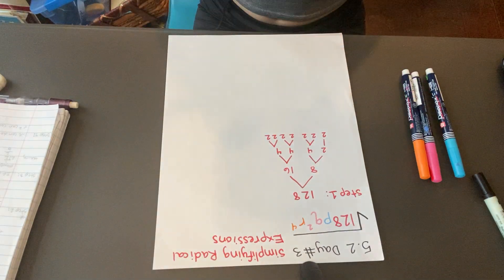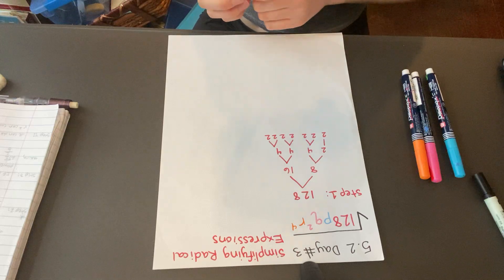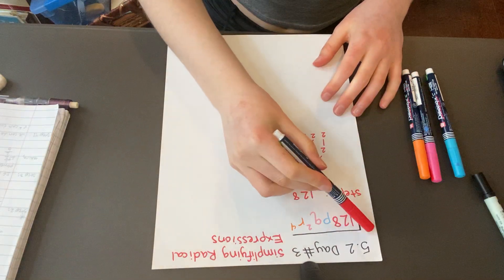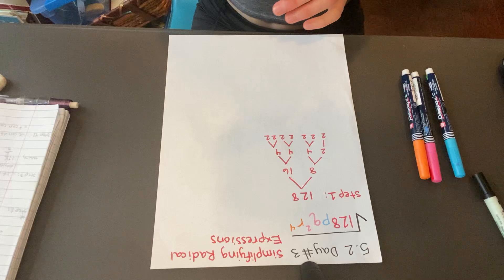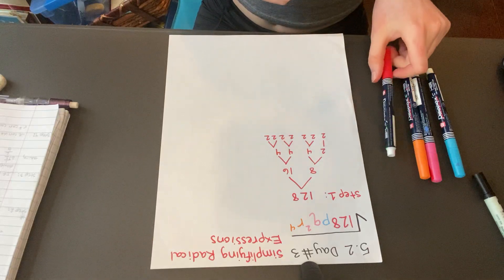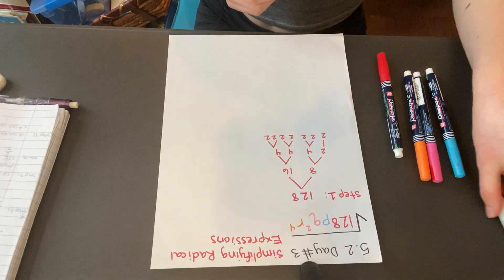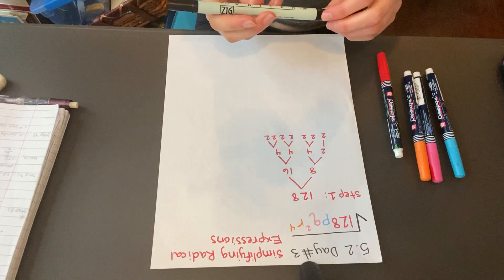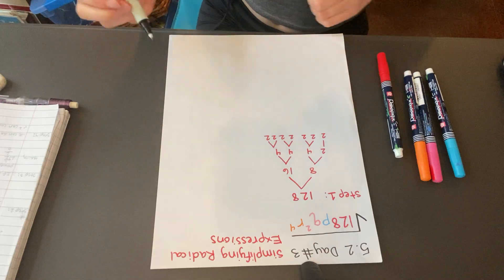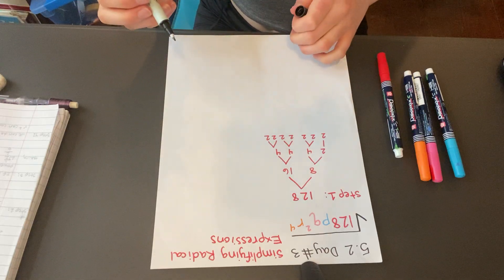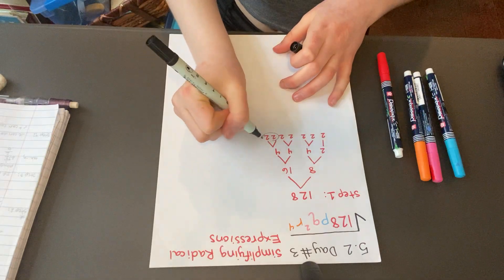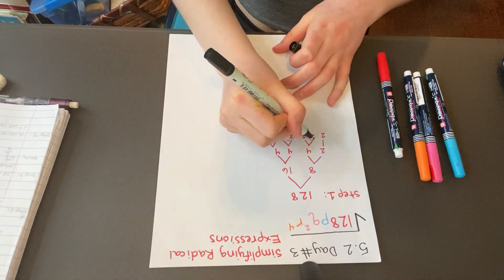Then we're going to bring down this 2. Since this is a square root, we can think of a 2 being out front of this radical sign. So we need pairs of 2.